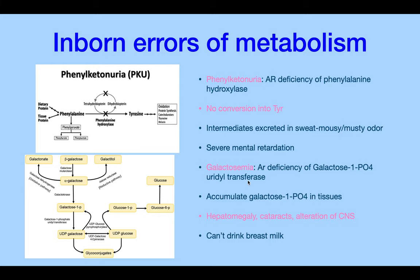In galactosemia, there is an autosomal recessive deficiency of galactose-1-phosphate uridyltransferase. Galactose-1-phosphate can't be converted to UDP-galactose, and therefore can't be made into glycoconjugates. Galactose-1-phosphate accumulates in the liver, eyes, and central nervous system. These children cannot drink breast milk and must be supplemented.